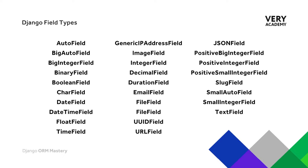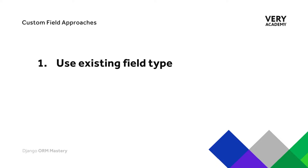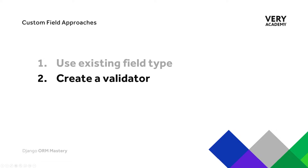There are a lot of different field types built into Django. So before creating a new custom field, the first step might be to check if there is an existing field type that will meet the needs of our data. In some cases, a field type might be suitable but we require additional validation.